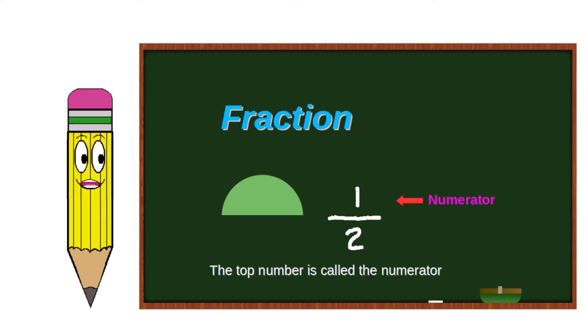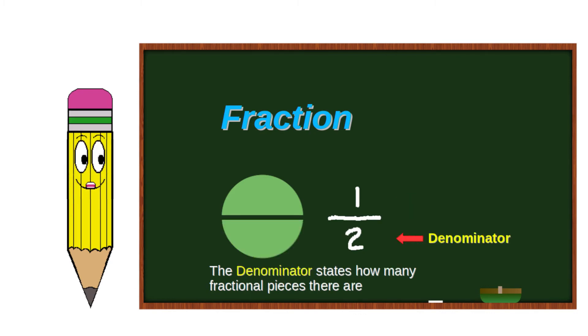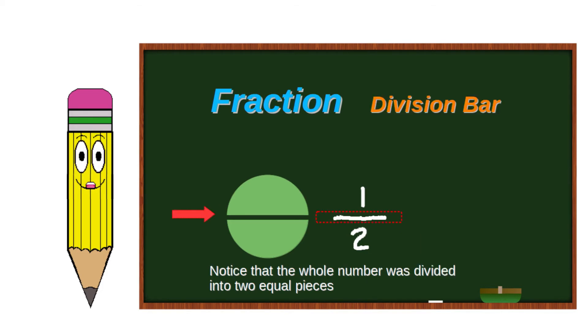The top number is called the numerator. The numerator states the quantity of equal fractions. The denominator states how many fractional pieces there are. Notice that the whole number was divided into two equal pieces.